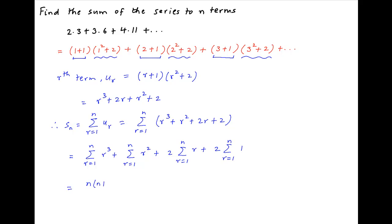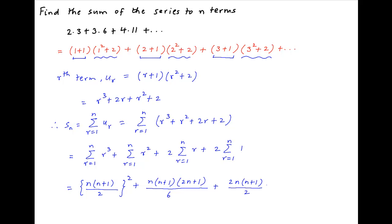Now, substituting the values of summation r cube, summation r square, and summation r, we get Sn is equal to n times n plus 1 upon 2 whole square, plus n times n plus 1 times 2n plus 1 upon 6, plus 2n times n plus 1 upon 2, plus 2n.